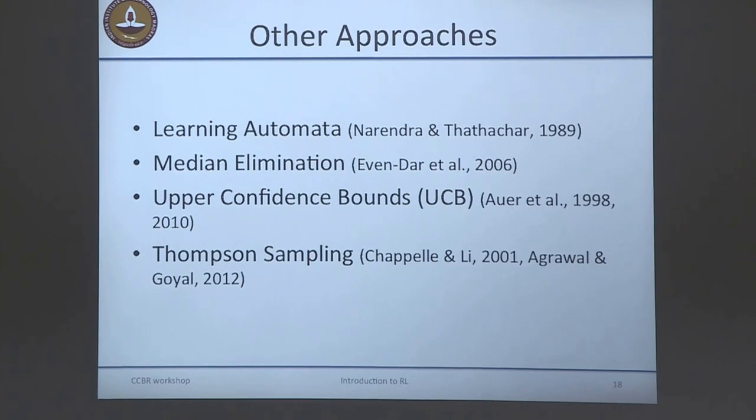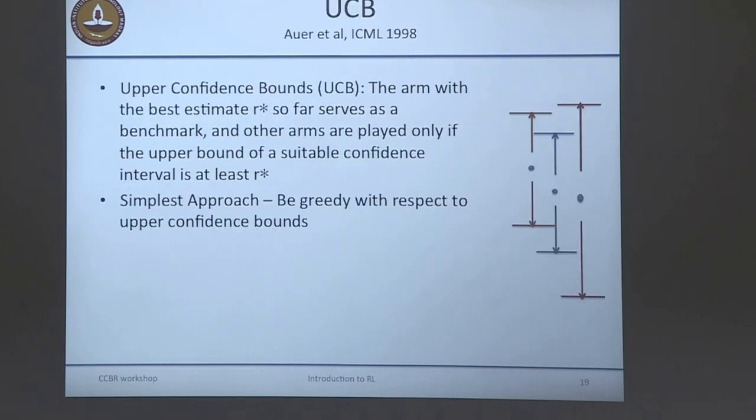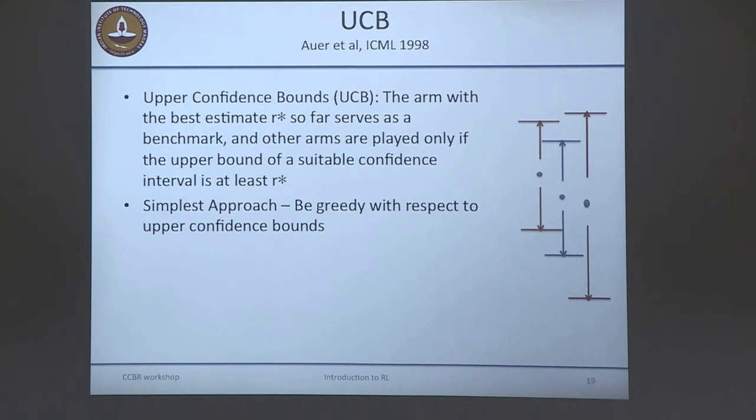There's a whole family of literature based on what are called learning automata, going back to the 1930s, originally started by Russian mathematician Tsetlin. There's a whole literature on finite state machines adapted to solve the bandit problem. Other approaches include median elimination, a landmark algorithm for achieving PAC optimality. Upper confidence bound (UCB) and Thompson sampling methods give regret optimality. UCB is popular not only for immediate reinforcement but increasingly in delayed reinforcement settings as well.